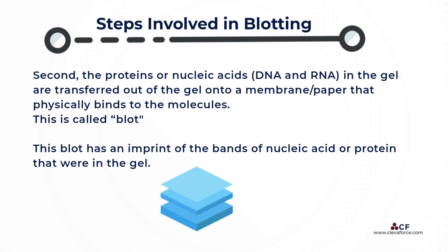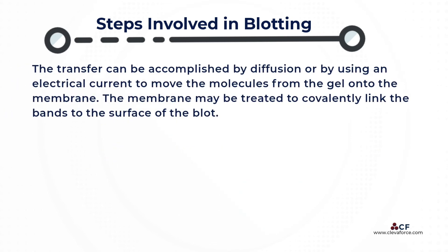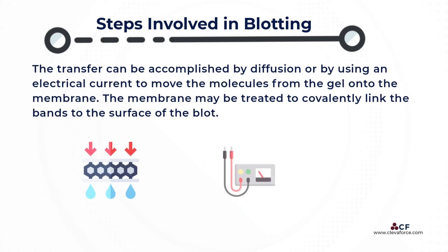This is called a blot. This blot has an imprint of the bands of nucleic acid or protein that were in the gel. The transfer can be accomplished by diffusion or by using an electrical current to move the molecules from the gel onto the membrane. The membrane may be treated to covalently link the bands to the surface of the blot.